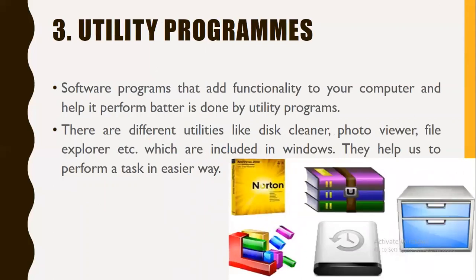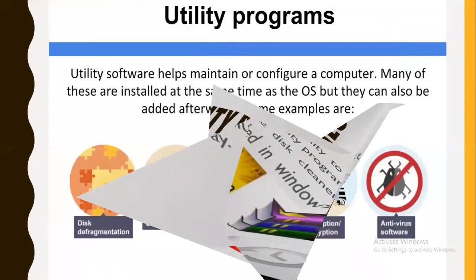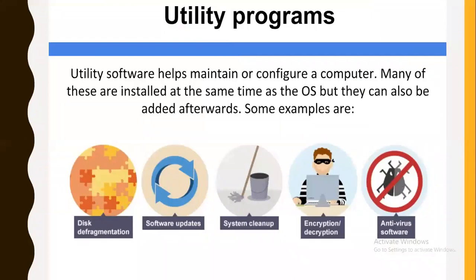The third type of system software is utility programs. Utility programs add functionality to your computer and help it perform better. There are different types of utility programs available, like disk cleaner, photo viewer, and file explorer — all included in the Windows operating system. They help us perform tasks in an easier way. Utility software helps maintain or configure a computer. Many are installed at the same time as the operating system, but some can also be added afterwards.